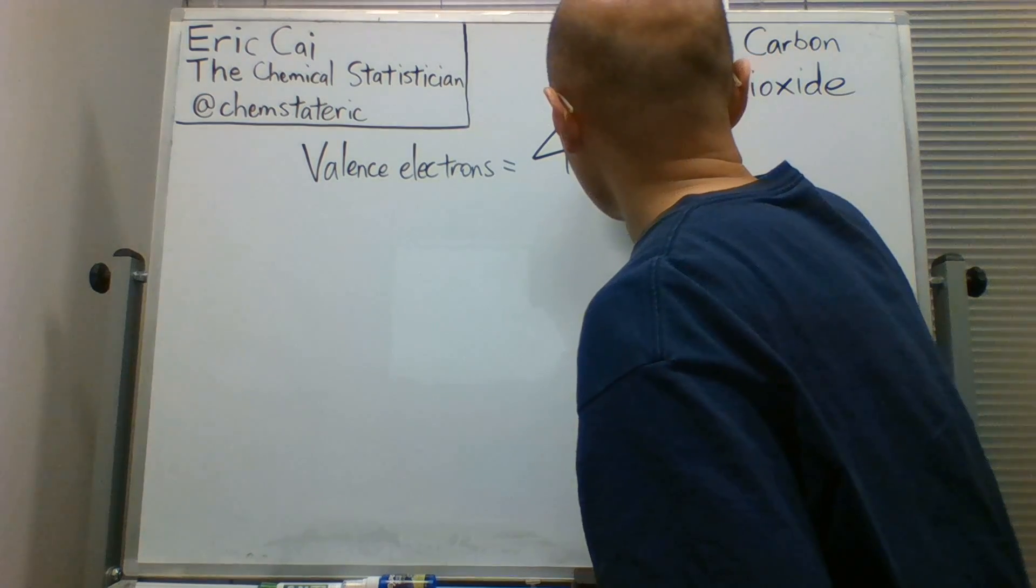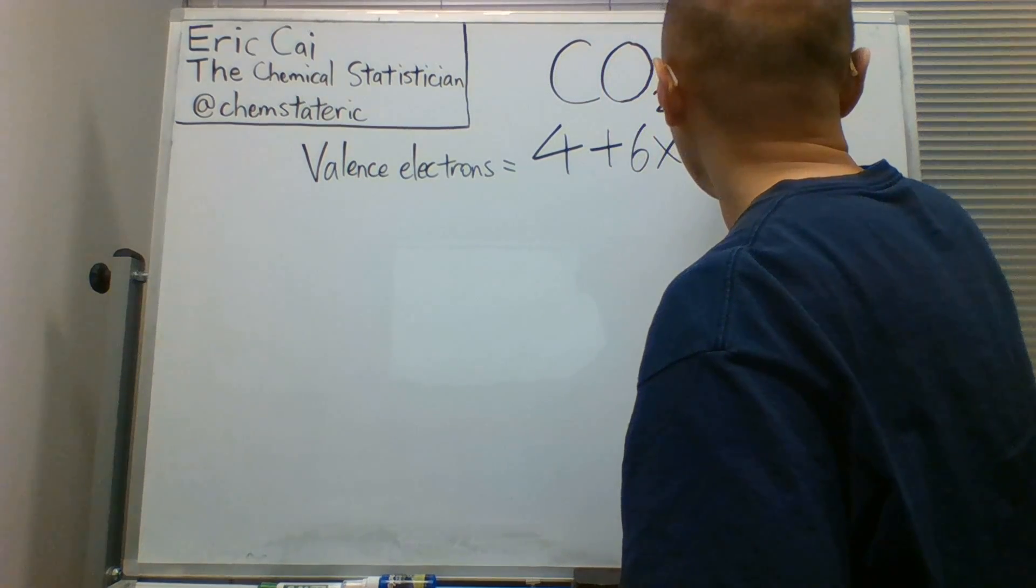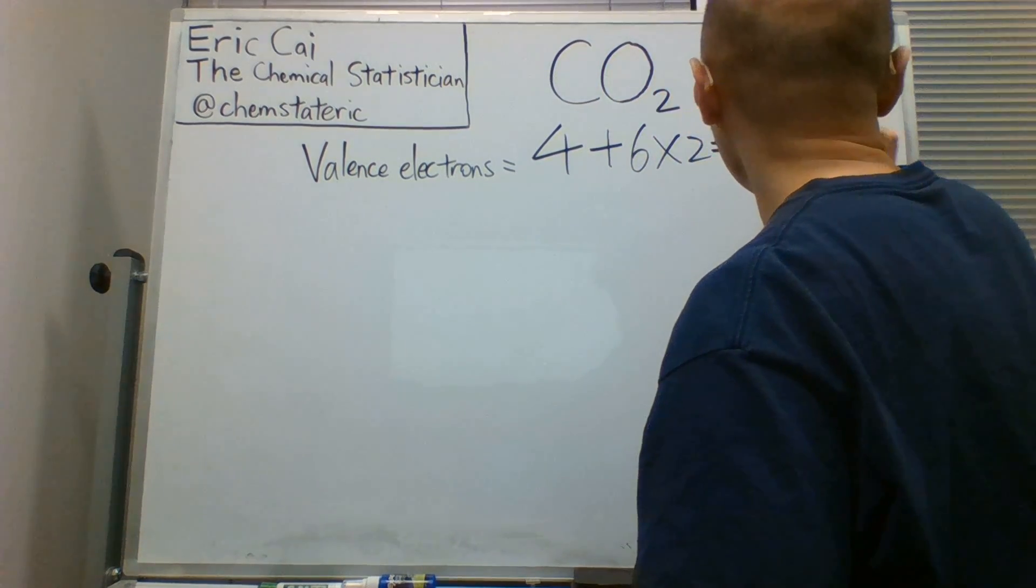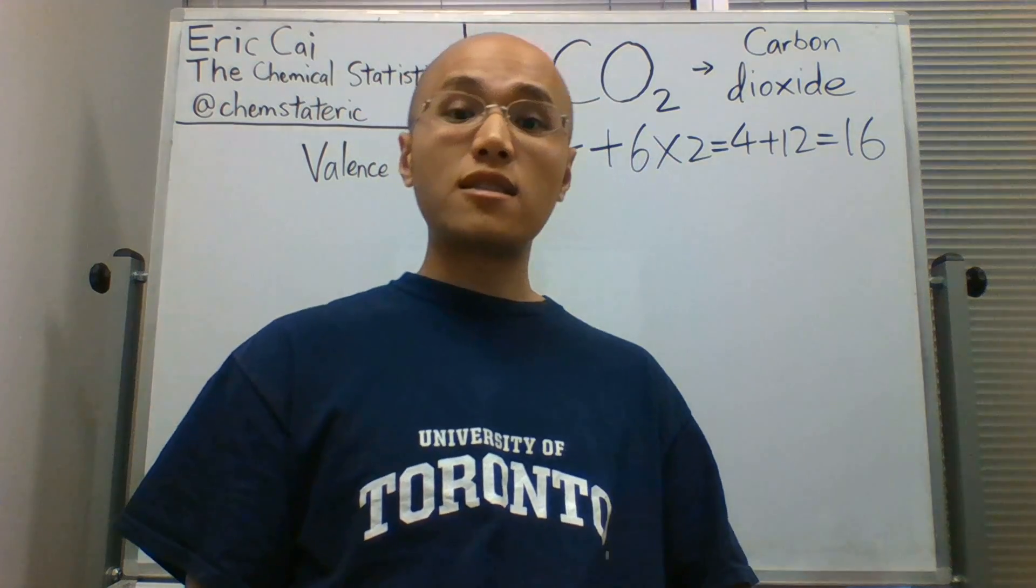Since there are two oxygens, we need to multiply that by 2. So there are 4 plus 12 equals 16 valence electrons in the constituent atoms.